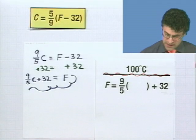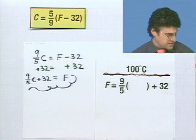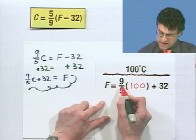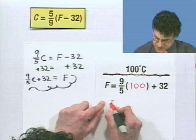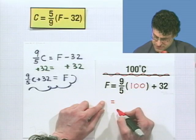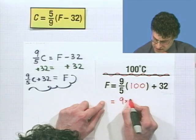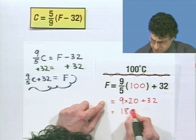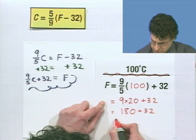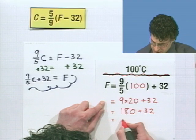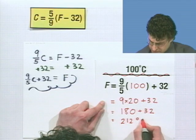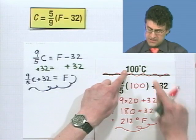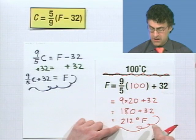In this case, we want to pop in 100 degrees. Now, that's hot, so I'm going to use red. And so I see 9 fifths times 100, which equals, well, 100 divided by 5 is just 20. So I see 9 times 20 plus 32, which equals 180. We do the multiplication first. Plus 32, which equals 212 degrees Fahrenheit. Hot stuff.